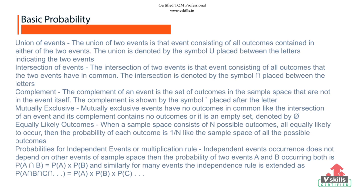When a sample space consists of n possible outcomes, all equally likely to occur, then the probability of each outcome is 1 by n. Probabilities for independent events or multiplication rule: independent events occurrence does not depend on other events of sample space. Then the probability of two events A and B occurring both is P A intersection B given by probability of A multiplied by probability of B, and similarly for many events.